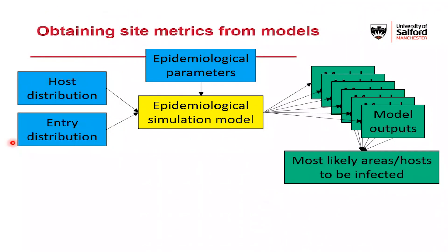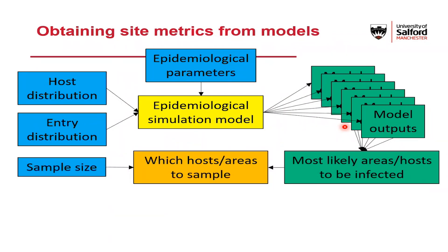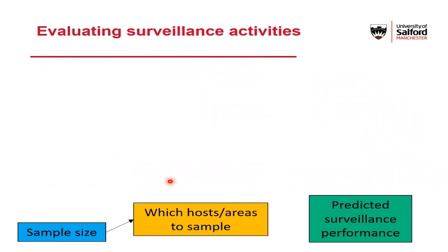To summarise what we've done: we plugged in our host distribution, our entry distribution, and the relevant epidemiological parameters like spread rate and spread distance into our model, generated a large number of model outputs, and condensed those down to identify overall where the most likely areas to be affected are. We would then take this a step further, identify which areas to sample, and considering the sample size, go out and sample them.